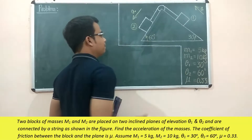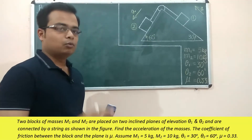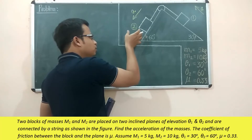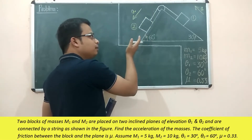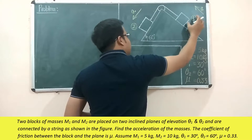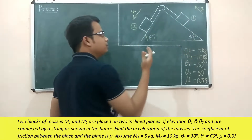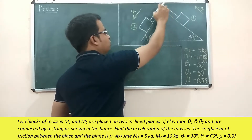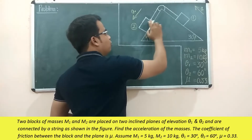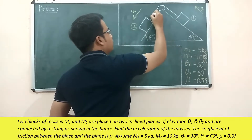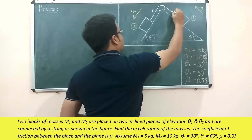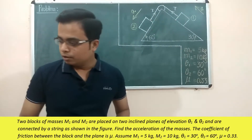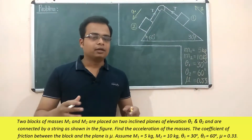What we're supposed to do is find the acceleration 'a' with which block two is moving down the plane, or equivalently the acceleration with which block one is moving up the plane. Both are going to be the same since they've been connected to each other with a single string passing over a pulley. Since the string is the same for both masses, the tension T is the same on both sides.